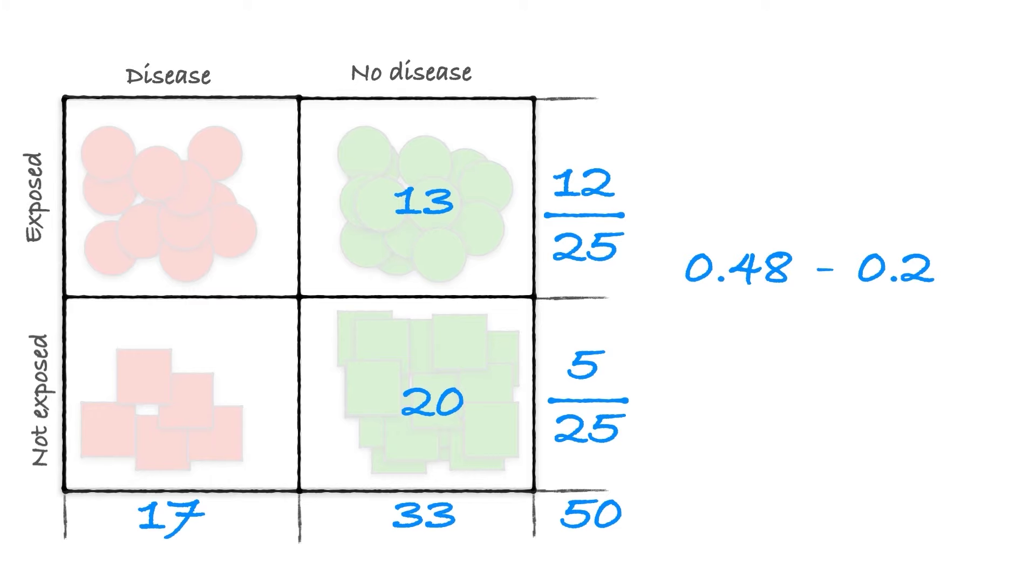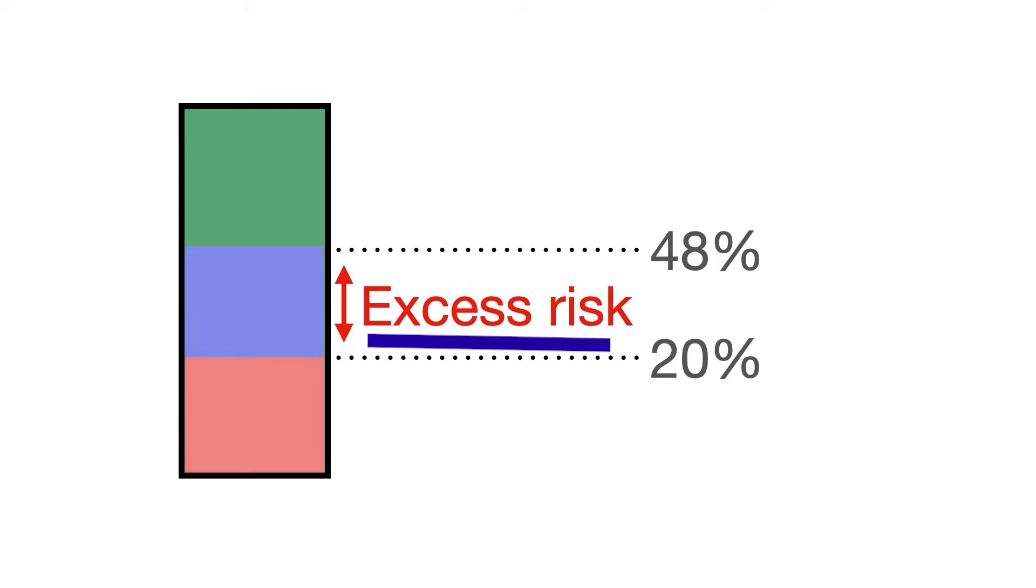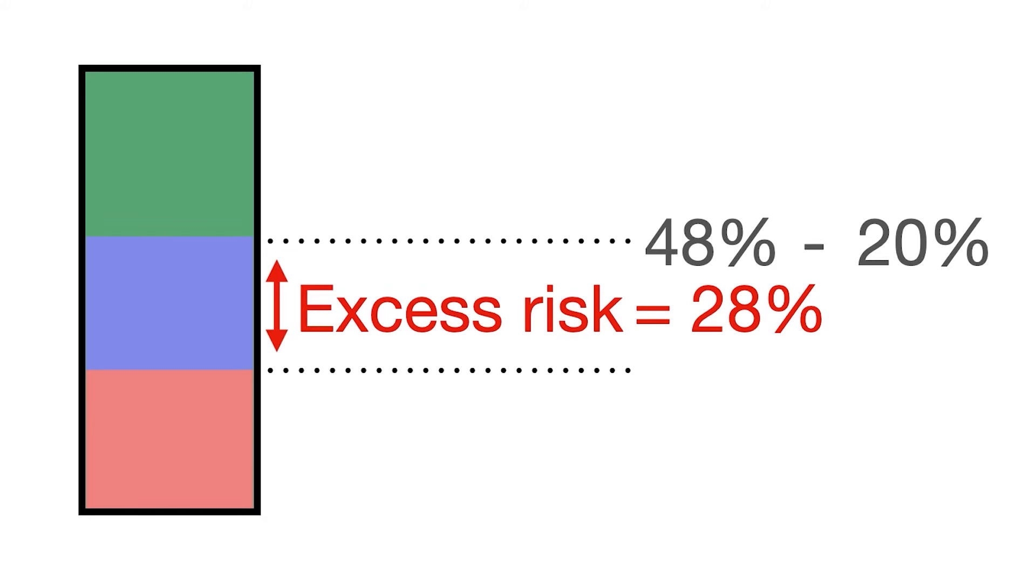So you can also look at the difference between these two groups. If you subtract the 0.2 from the 0.48, you get 0.28. This is the excess risk or the attributable risk, and let me explain to you what that means. Let's imagine that you are a non-smoker. Your risk of disease is 20% at that point in time, but then you take up smoking and your risk goes up to 48%. Can you see that the smoking didn't cause all of the risk? It didn't cause all of the 48%. There was already a background risk of 20%.